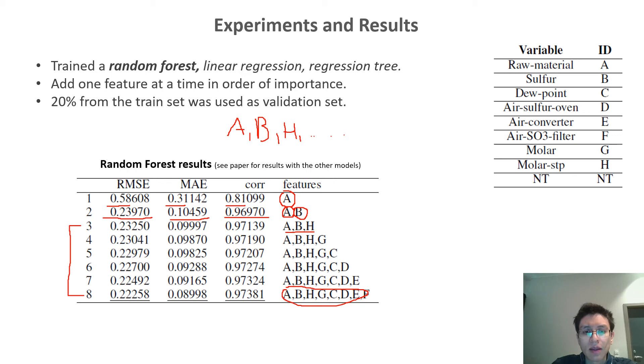So this means that, for example, if one of the sensors during the process fails, for example, the sensor in charge of measuring the dew point, then we can still try to predict the NT value with good accuracy. So we would not need to stop the process.